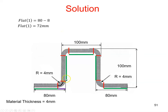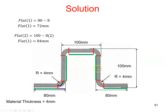Flat 2 is the distance between these bend tangent lines, and that is 100 millimetres. So it's 100 millimetres from there to there, and we're going to remove the setback — this distance from there to there, and this distance from here to here. Both setbacks are 8 millimetres, so 2 times 8 is 16. 16 from 100 gives 84 millimetres.